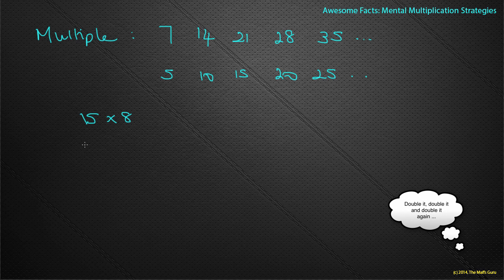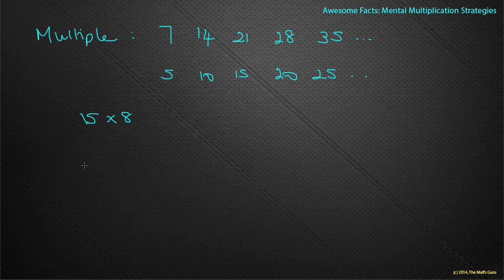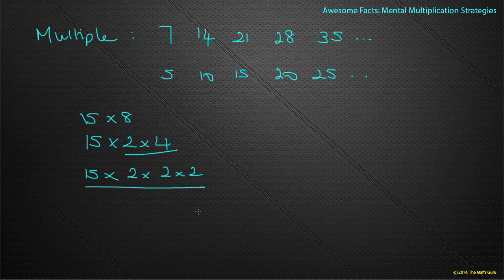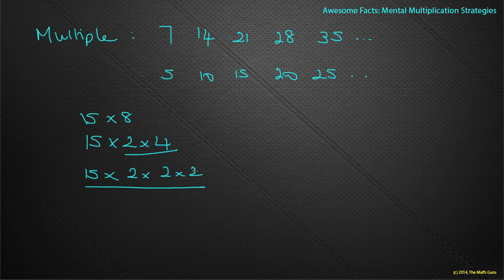So why? Why would 15 times 8 be the same as double it and double it and double it again? Well, if we think about the number 8, that is the same as 15 times, well, 8 can become 2 times 4. Why? Because 2 times 4 is exactly the same as 8. But hold on, I know that 4 can be split up into 2 times 2. And look at that. Wow, that's pretty cool. 15 times by 2, times by 2, and times by 2.